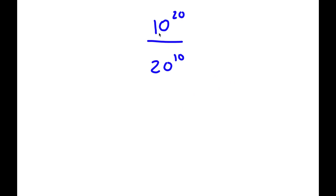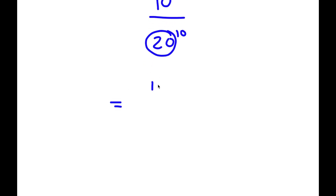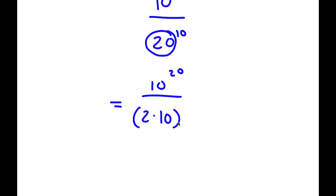In this problem, I have 10 to the power of 20 over 20 to the power of 10. To solve this, I'm going to rewrite 20 as 2 times 10. So now I have 10 to the power of 20 over 2 times 10, all to the power of 10.